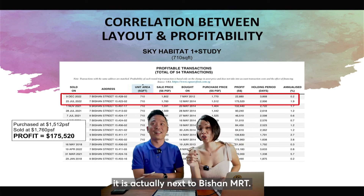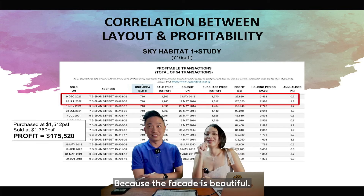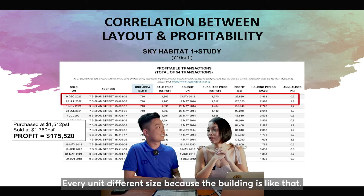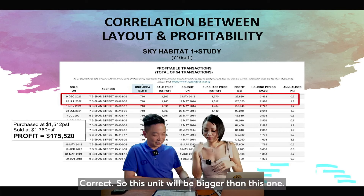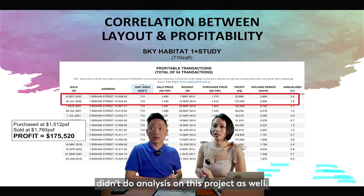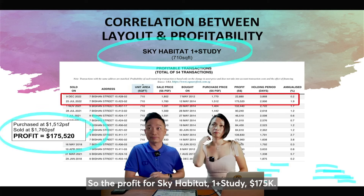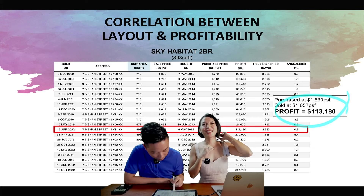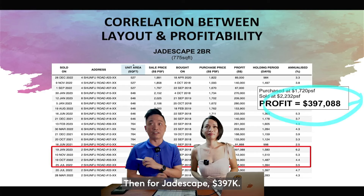Next example: Sky Habitat, located next to Bishan MRT — you can't miss it when you drive past. The architect is the same one who built Marina Bay Sands, and every unit is a different size because the building is pyramid-shaped, making it very hard to analyze. The profit for Sky Habitat one-plus-study was $175,000 and two-bedroom was $113,000 over 10 years — not impressive. Compare that to Jadescape, near Marymount MRT, which made $397,000 in five years.